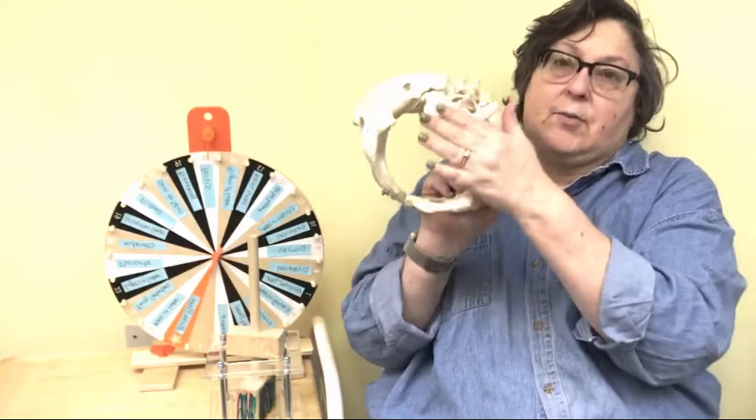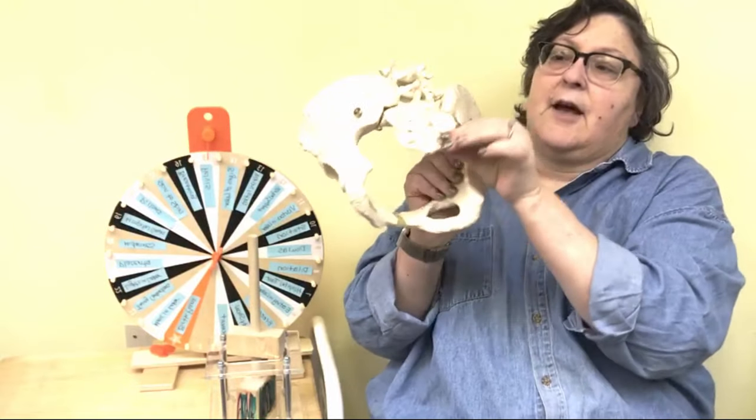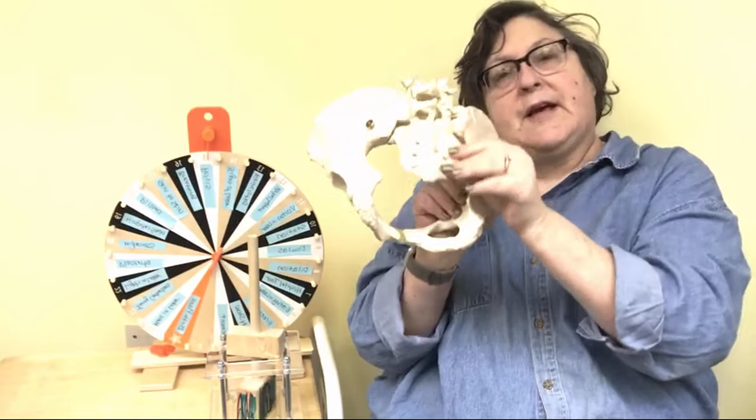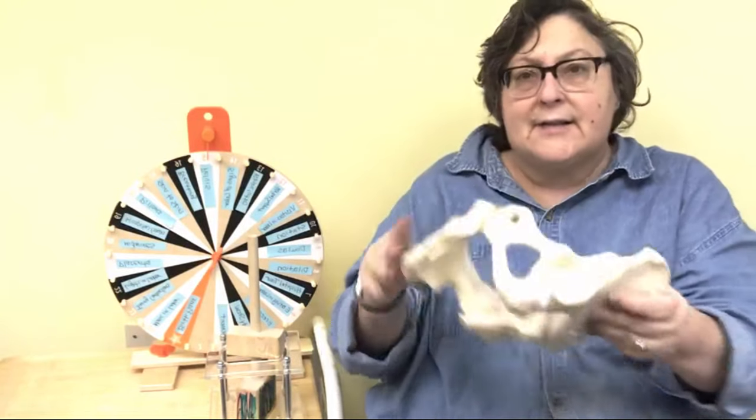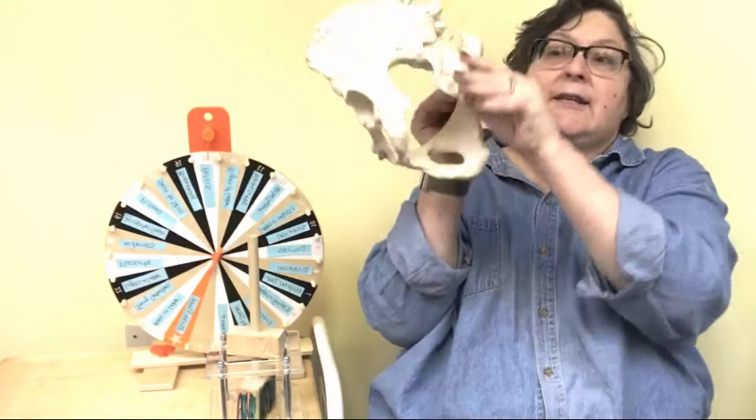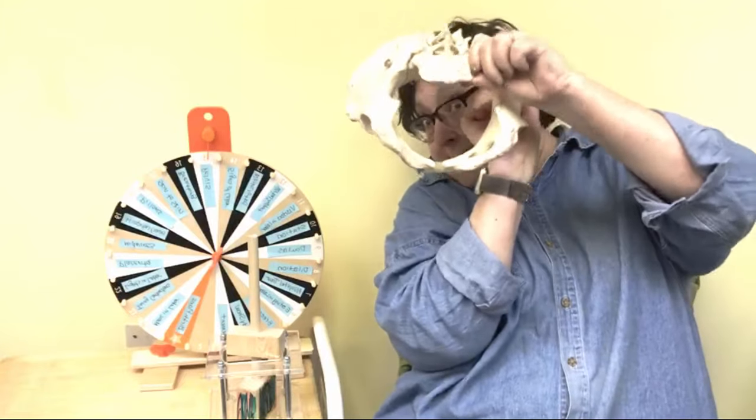Also something I want to show you is that this is the sacrum right here. And you can see that it moves. And this is often called the gate of birth. And as the baby is coming down, they are pushing that sacrum out of the way. And that is creating space. Do you see how much more space that makes?